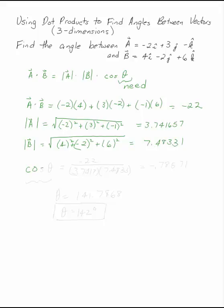So the cosine of the angle that we're looking for is minus 22 divided by 3.74127 and 7.4833. The more significant figures you get, the better your arc cosine is going to be. The arc trig functions or the inverse trig functions end up being very particular about decimal points. So keep as many as you can.